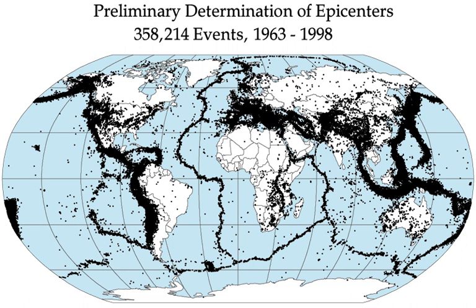A tectonic earthquake begins by an initial rupture at a point on the fault surface, a process known as nucleation. The scale of the nucleation zone is uncertain, with some evidence — such as the rupture dimensions of the smallest earthquakes — suggesting that it is smaller than 100 meters, while other evidence, such as a slow component revealed by low-frequency spectra of some earthquakes, suggests that it is larger. The possibility that the nucleation involves some sort of preparation process is supported by the observation that about 40% of earthquakes are preceded by foreshocks. Once the rupture has initiated, it begins to propagate along the fault surface. The mechanics of this process are poorly understood, partly because it is difficult to recreate the high sliding velocities in a laboratory.